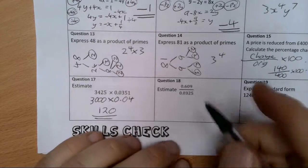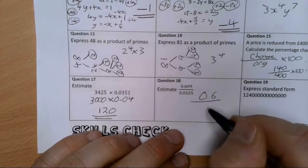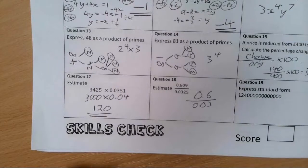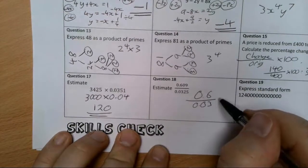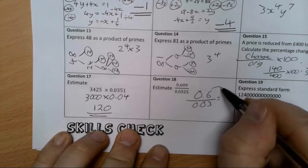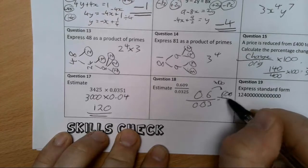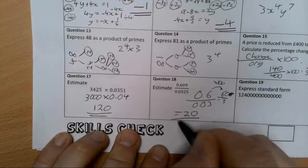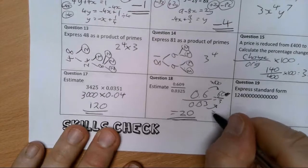Next one, I've got 0.6 divide by 0.03. So what I might do is just multiply those both using equivalent fractions, times those both by 100. So that gives me 60 divided by 3 which gives me 20, just using equivalent fractions there.